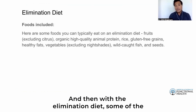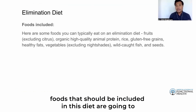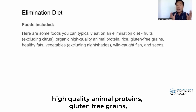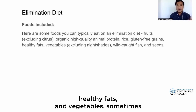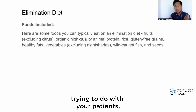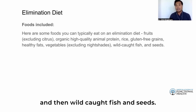Foods that should be included in the elimination diet are fruits (excluding some citrus), high-quality animal proteins, gluten-free grains, healthy fats, and vegetables (sometimes excluding nightshades, depending on what you are trying to do with your patients), as well as wild-caught fish and seeds.